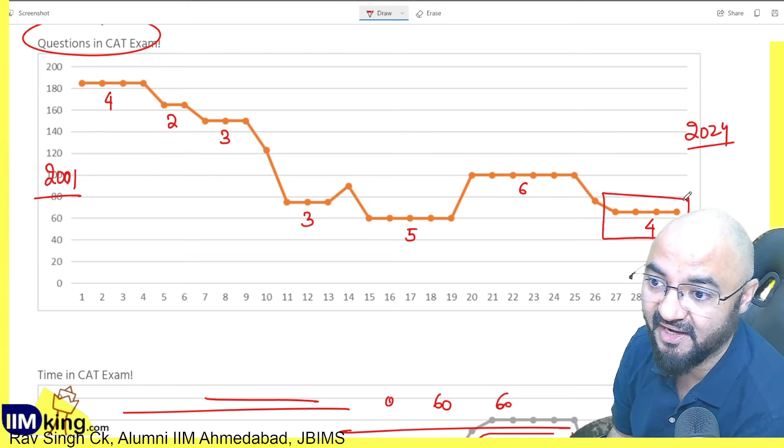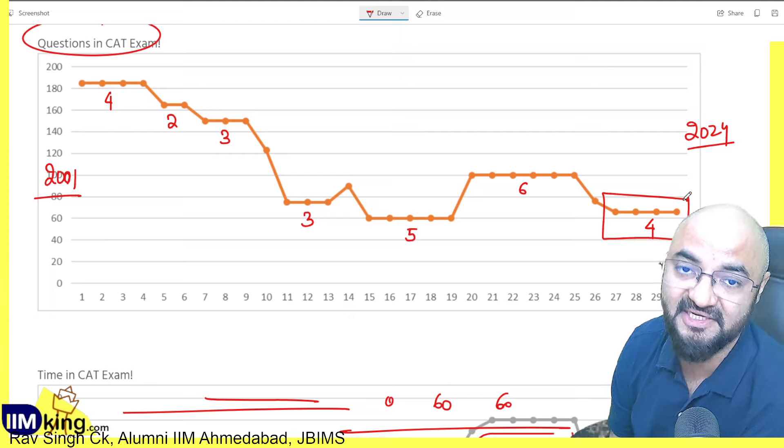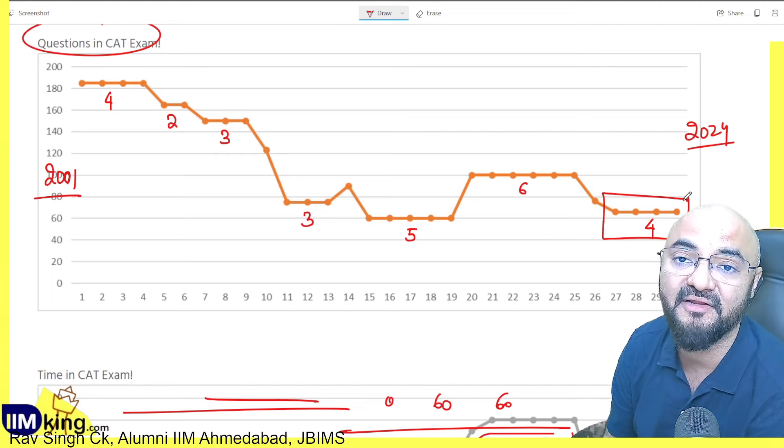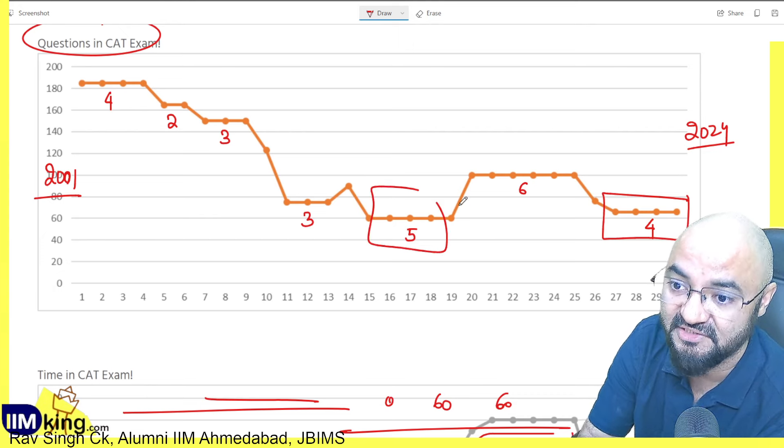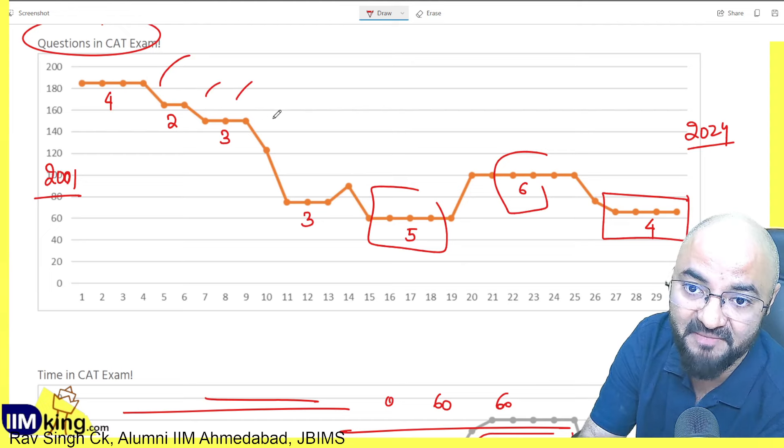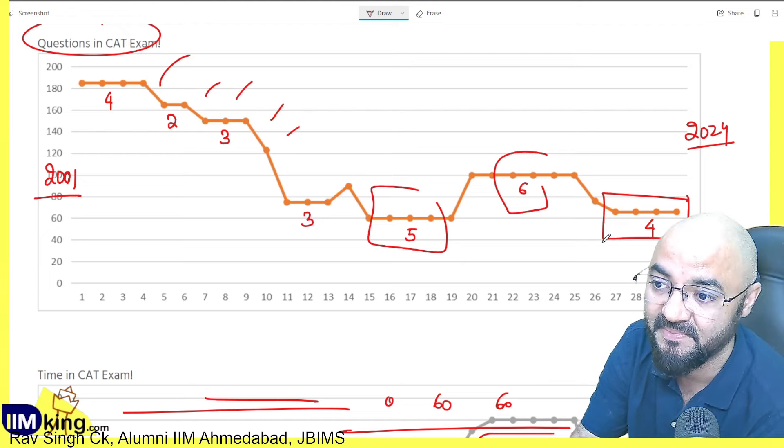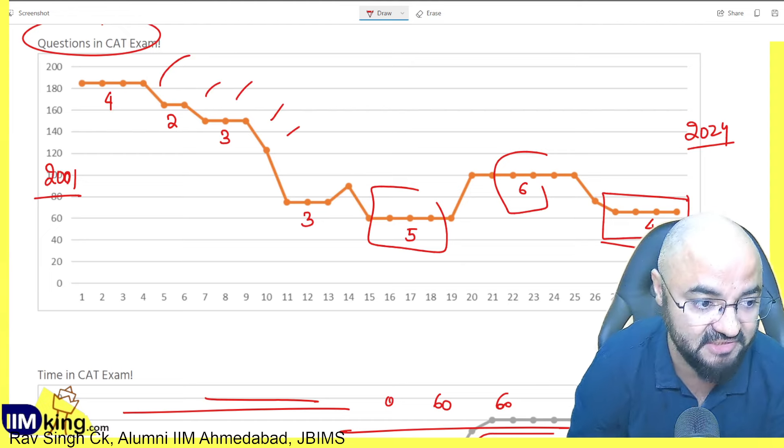But looking at the trend, I think once they change the pattern, they try to keep it safe for the next few years. That's what we're seeing recently - 5 years the same pattern went, 6 years the same pattern went, whereas earlier it was less. Earlier it used to change quite frequently. Now for 4 years the same pattern is going on.